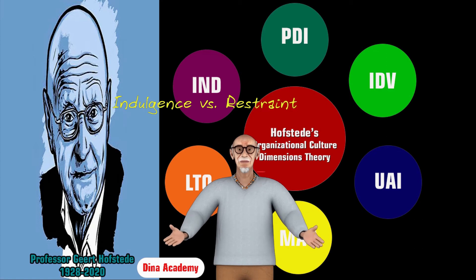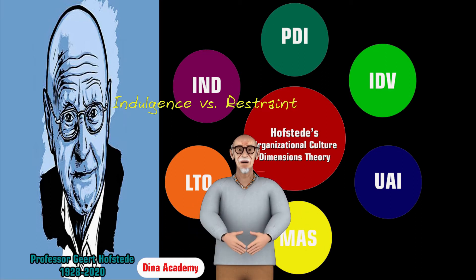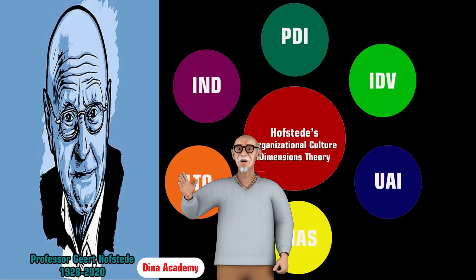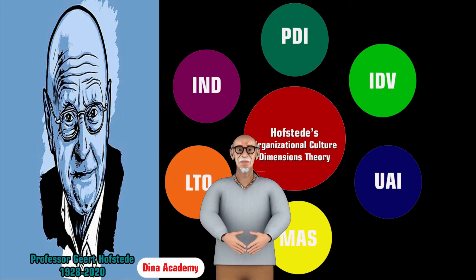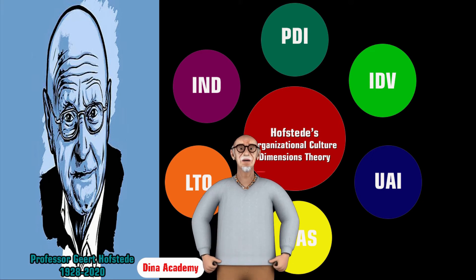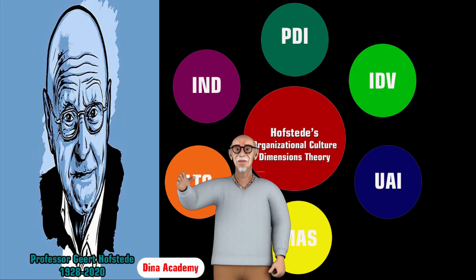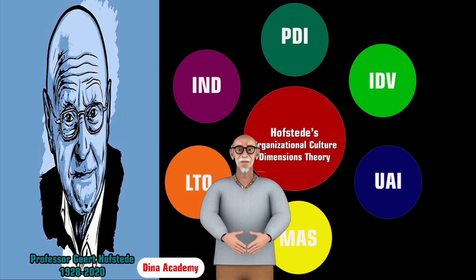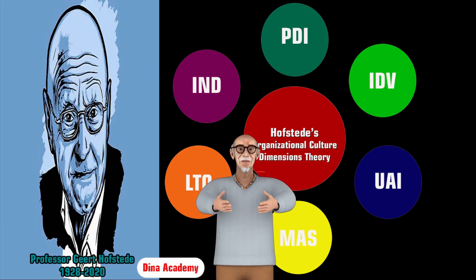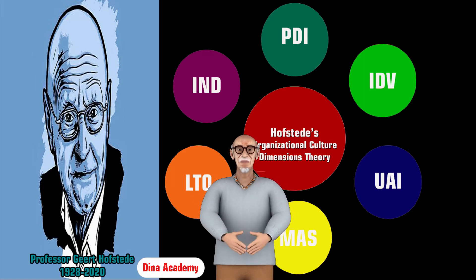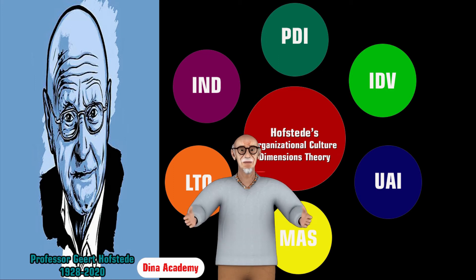PDI - Power Distance Index: The Power Distance Index is defined as the extent to which the less powerful members of organizations and institutions, such as the family, admit and assume that power is distributed unequally. In this dimension, inequality and power are perceived from the followers, or the lower level. A higher degree of the index indicates that hierarchy is clearly established and executed in society without doubt or reason. A lower degree signifies that people question authority and attempt to distribute power.